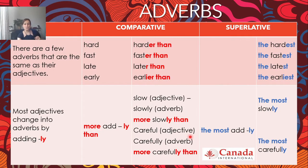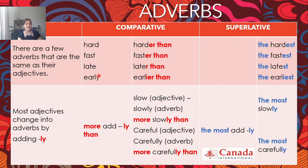Now let's see some rules. Here we have the comparatives and here we have the superlatives. There are a few adverbs that are exactly the same as their adjectives — for example, as we have said before: hard, fast, late, early. So the comparative would be harder than, faster than, later than, earlier than. The superlative is going to be the hardest, the fastest, the latest, the earliest.